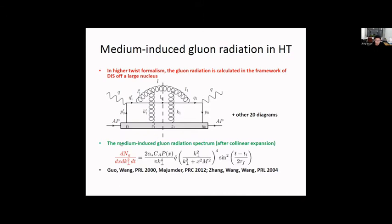After some simplification, especially after the collinear expansion, we can write the gluon emission spectra in terms of the parton splitting function, the q-hat, the decoherence effect, and the interference effect. Here x represents the fractional energy of the gluon with respect to the parent heavy quark, and k-perp is the transverse momentum of the gluon. This is the key quantity needed for the LBT model calculation.